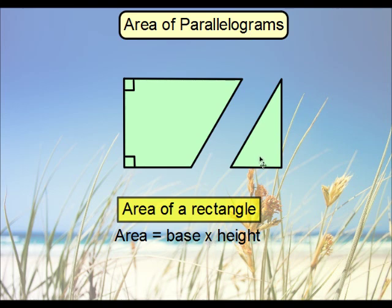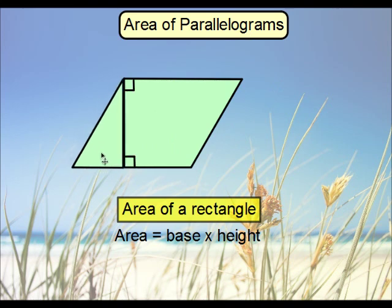If you were to take this and move it over here to the end, what you should realize is that what we have is a parallelogram. In a parallelogram, you'll notice that it has the same area because of the fact that we're still dealing with the same two pieces. Because of that, the formula for the area of a parallelogram is the same as it is for any rectangle or square. That is its base times height.